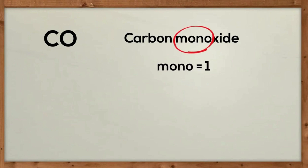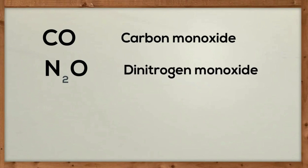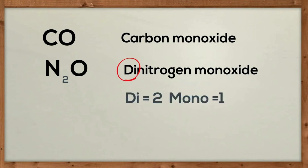Up next is N2O. Now we have two nitrogens, so we will use a prefix of di. So it will be dinitrogen monoxide, because you only have one oxygen. Also notice that instead of using the full name of the second element, you use the -ide ending.